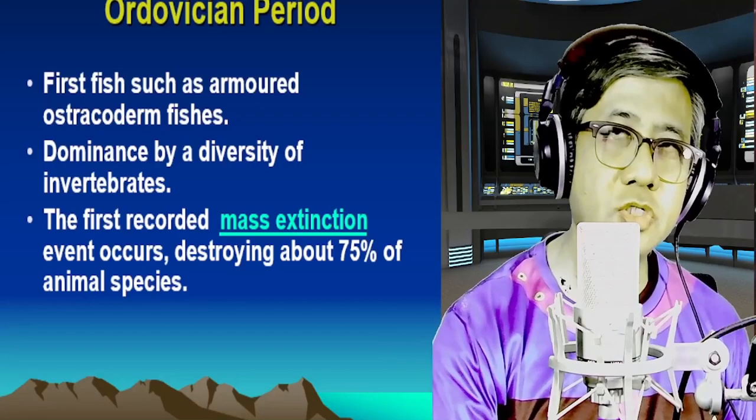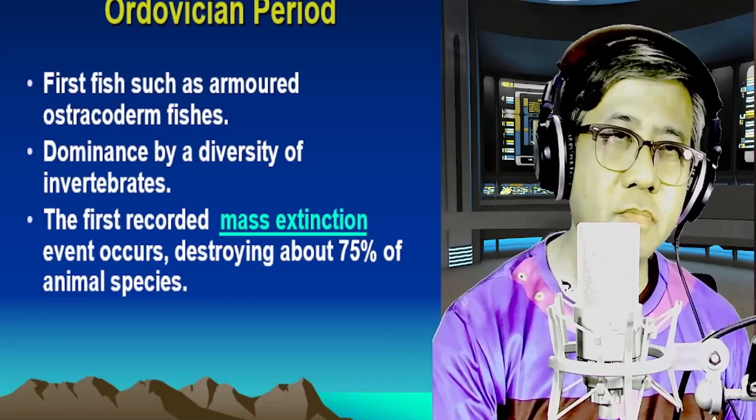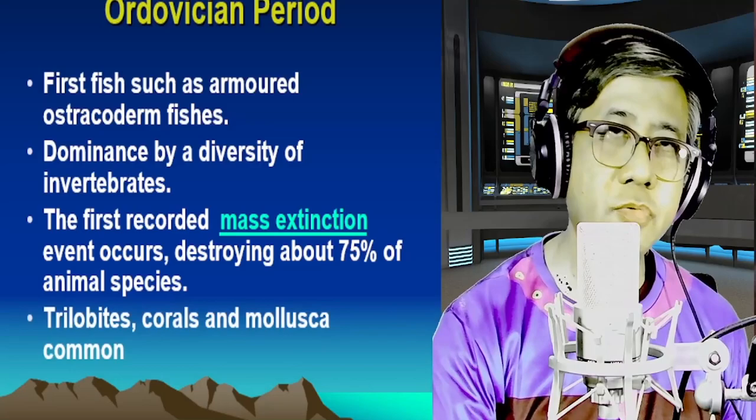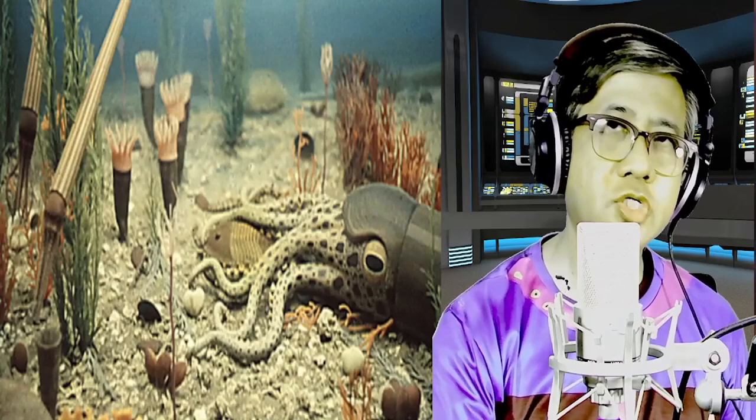This mass extinction was due to tectonic movement of the land masses, resulting in the extinction of about 75% of life on earth. Trilobites, corals, and other members were affected. Let's watch a video to visualize further the major events that occurred during the Ordovician period and the cause of that first mass extinction.